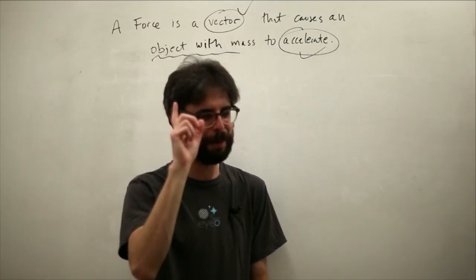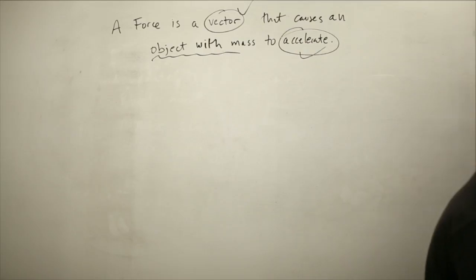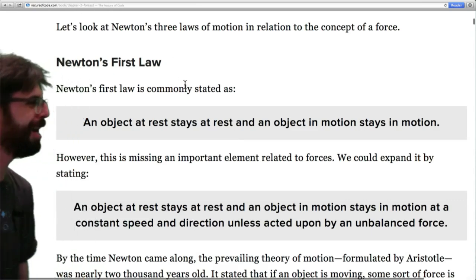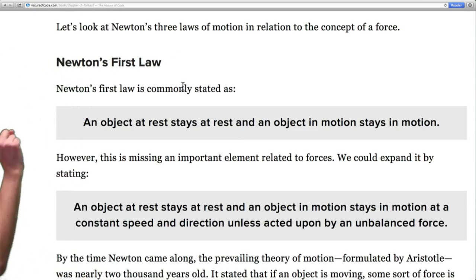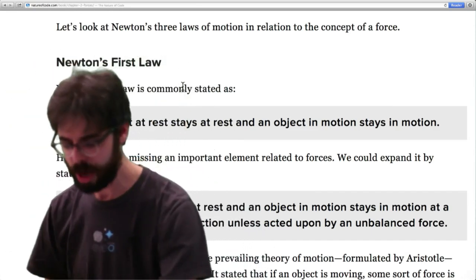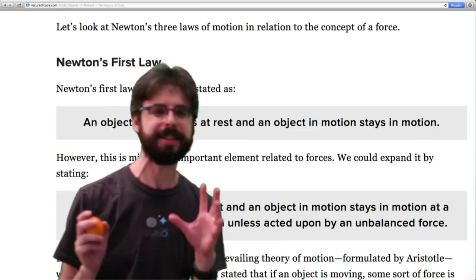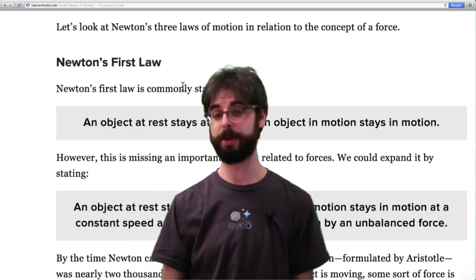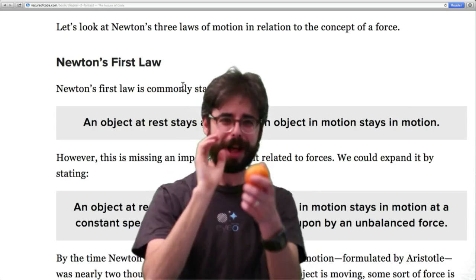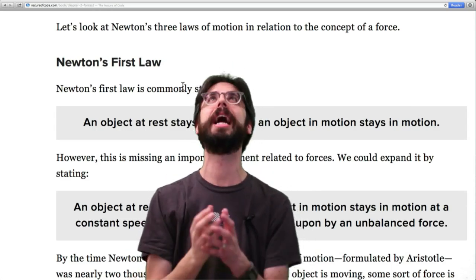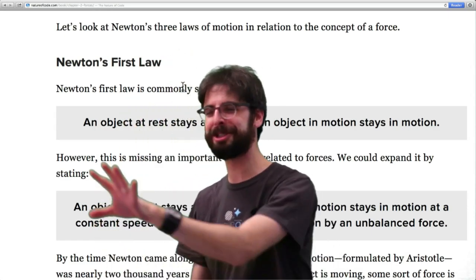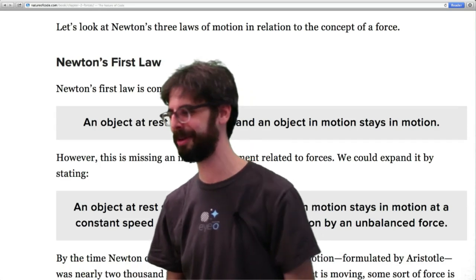Here is Newton's first law. An object at rest stays at rest and an object in motion stays in motion. It's a little bit misleading to state that. Before Newton came along, people thought that if you wanted something to keep going, you had to keep applying a force to it. So if I throw this across the room, it landed on the sweater. It stopped moving, right? To get it to keep moving, I have to keep applying a force to it.